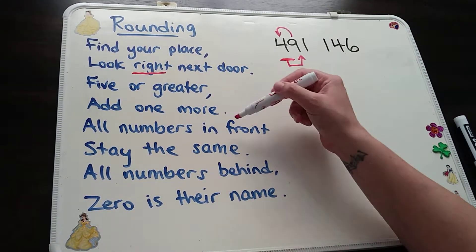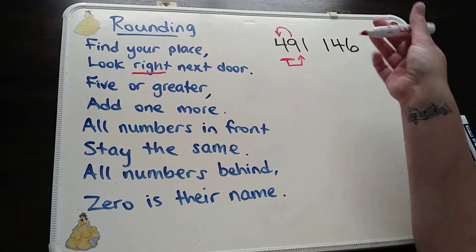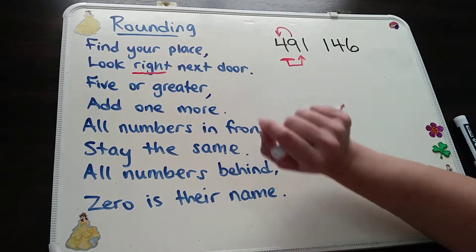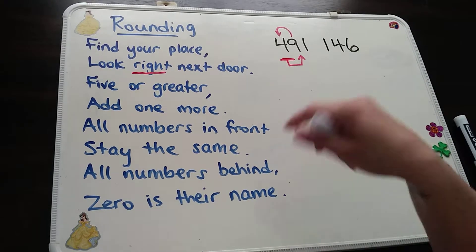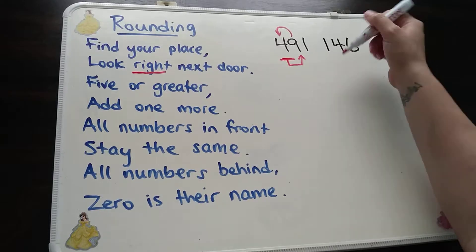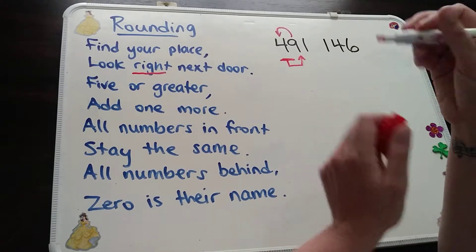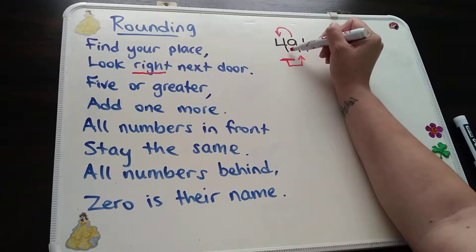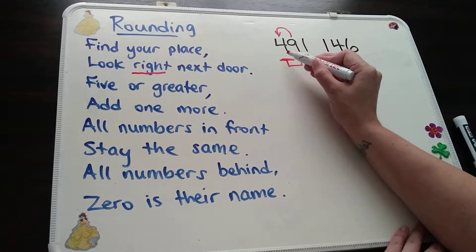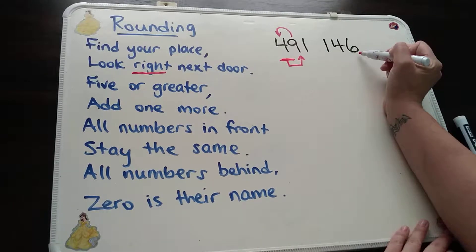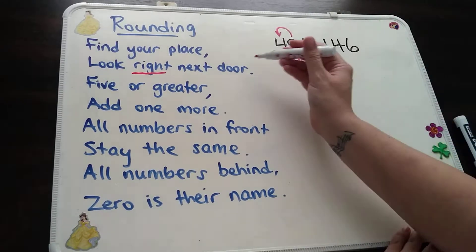The next part: all numbers in front stay the same. So if I was rounding to a different place value and there were numbers in the front, I would keep them exactly as they are. And all numbers behind, zero is their name — that means all the numbers that come after will be turning into zero. So we can't just leave it like this; we have to make sure that we write the correct answer. Coming back, I need to figure out: is 491,146 closer to 400,000 or closer to 500,000?